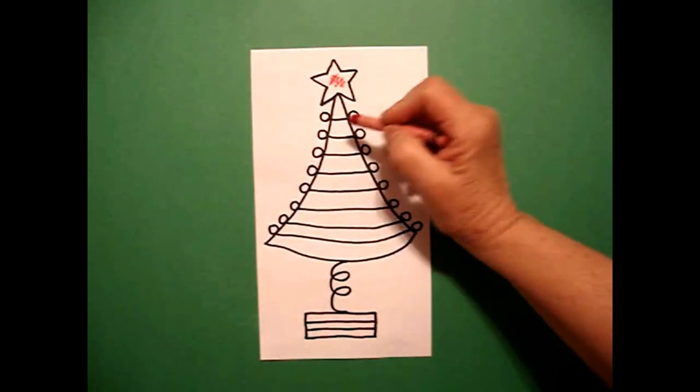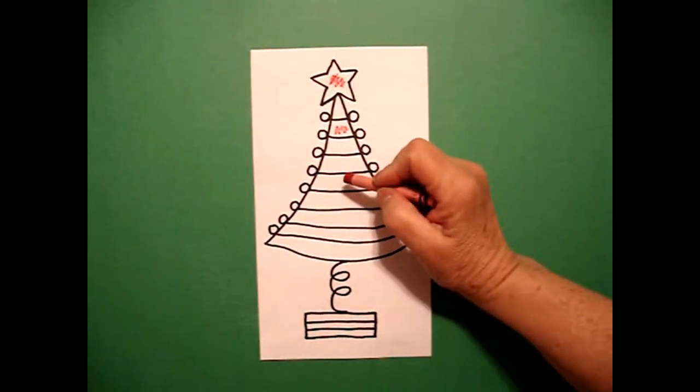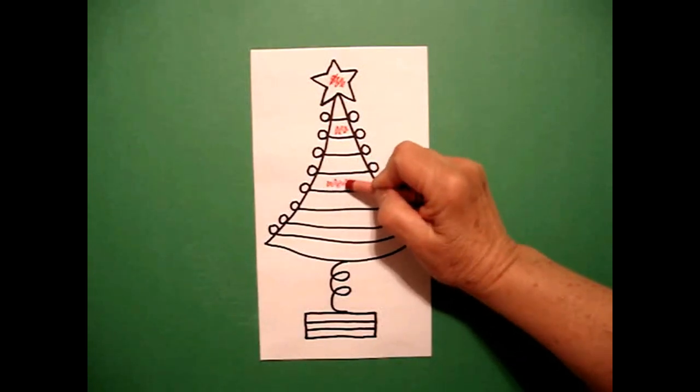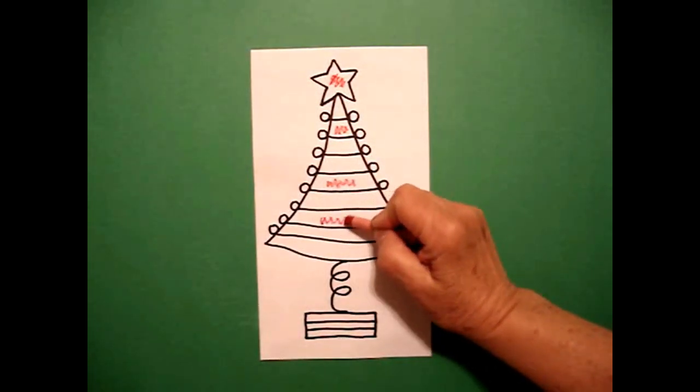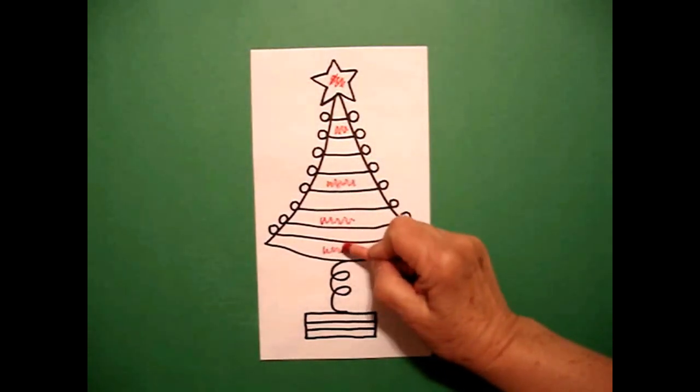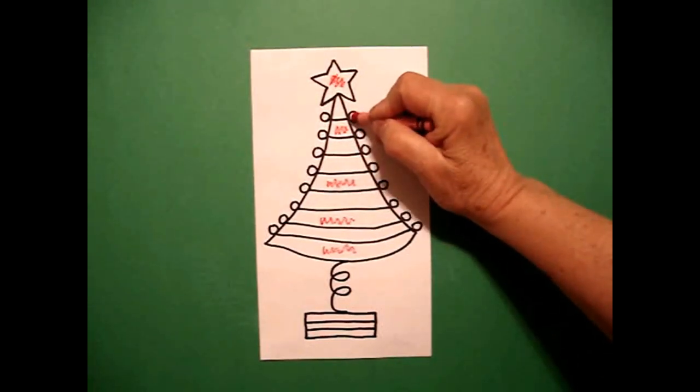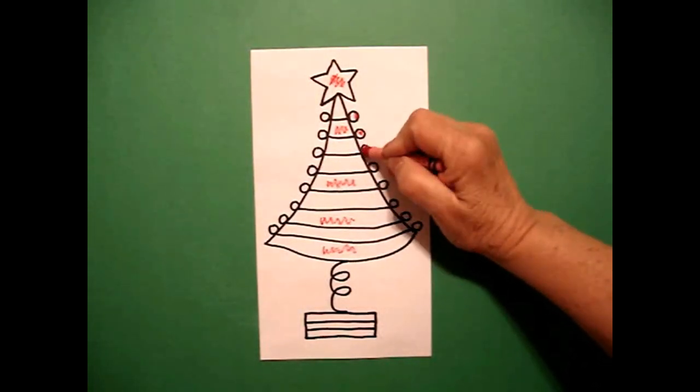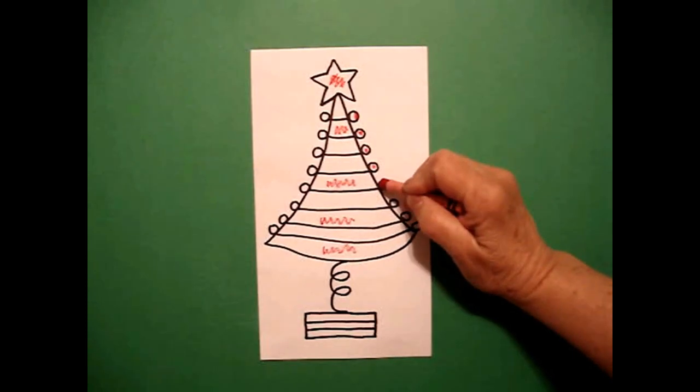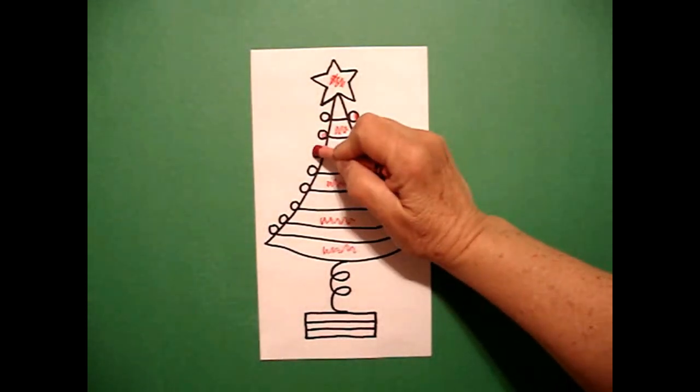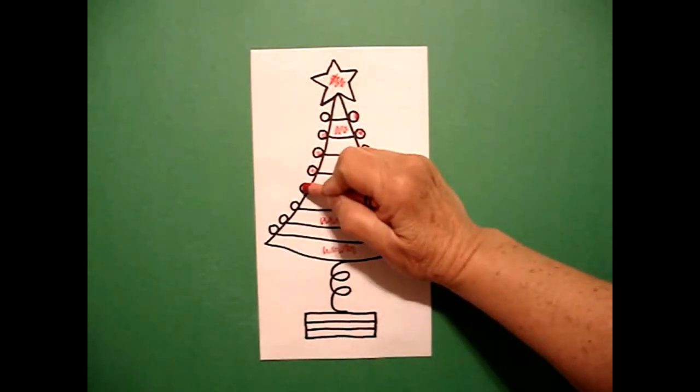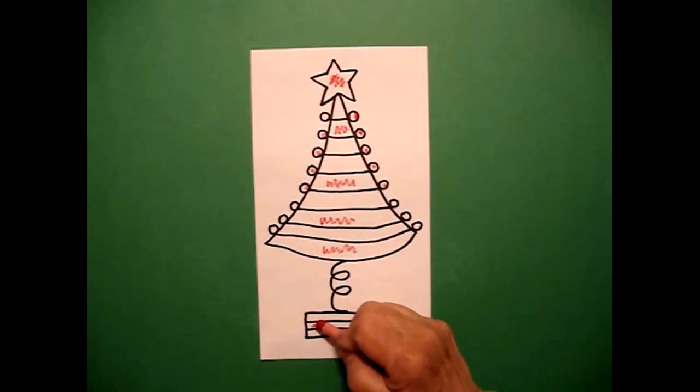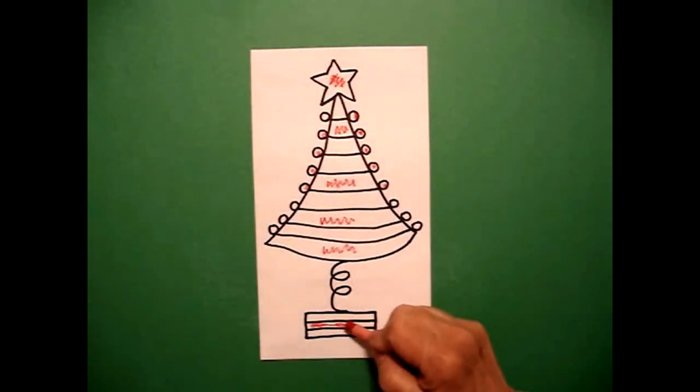I started out and did red, red stripes, all the way down. I took my red and I did my red on my little circles, all the way down, both sides. And right down on the base, I'm going to do this section red also.